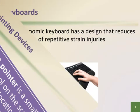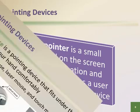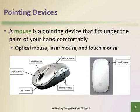A pointer is a small symbol on the screen whose location and shape change as a user moves a pointing device. The mouse is the most popular pointing device on desktop computers because it is easy to use. Since its introduction in 1965, the mouse has gone through several transformations.